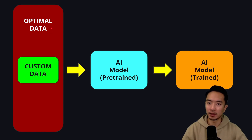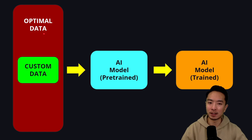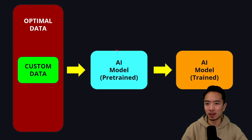The problem is that the custom data you provide is typically only a very small portion of the optimal data. By optimal data, I mean that for a model to perform as well as you'd like, you need a sufficient range of data covering all the different corner cases you want it to handle. Getting all of this data is significantly challenging — that's why, for example, Tesla's FSD is still not fully supervised self-driving yet.